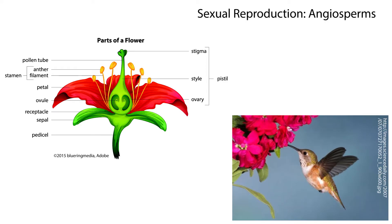Angiosperms are flowering plants. Flowers contain both male and female gametophytes. The male gametophytes are the pollen of the flower and the female gametophytes are the ovules. Flowers do not necessarily need wind in order for pollination to occur; generally, animals perform this process. When pollination occurs, the ovule swells and its wall toughens to become a seed. The ovary then grows around this to become the fruit.